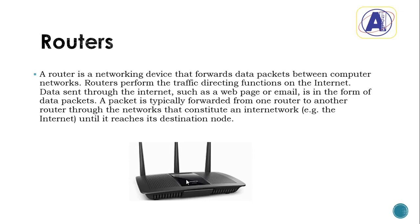If you check my previous video on understanding IP addresses, you will know what this means. You send information to this IP address so that you can get connected online and access everything you need. Banks, for example, need to send information — they use Office 365 to send emails across branches. When branch locations are far apart, they need the network to be available. That is why they all use a standard network, which is the Cisco network.